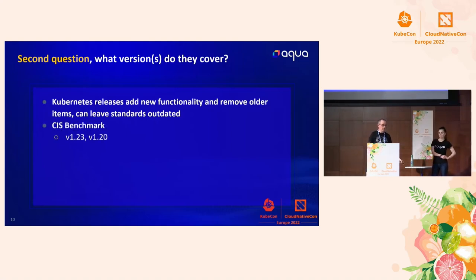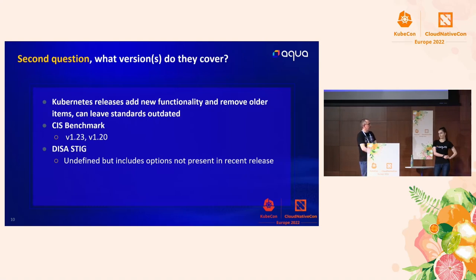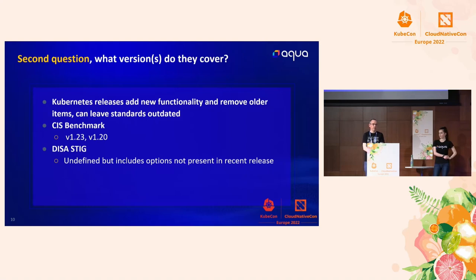CIS benchmarks currently have benchmarks for 1.23 and 1.20 — typically we do it every three versions, which is a resource issue. CIS is an open community and we're happy for someone to come and help produce benchmarks for every Kubernetes version. DISA STIG is undefined in terms of version but includes options not present in recent releases — I found at least one check that references Kubernetes 1.12. This is a big challenge in standards world: do you have resources to update every four months or even every year?